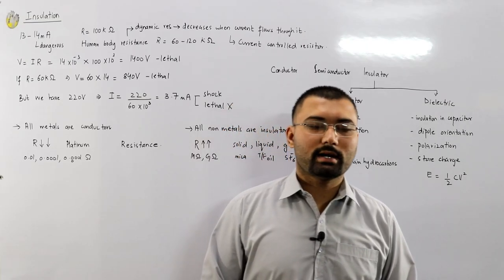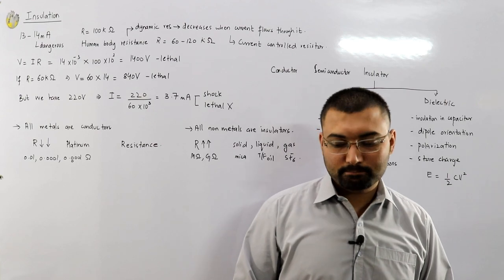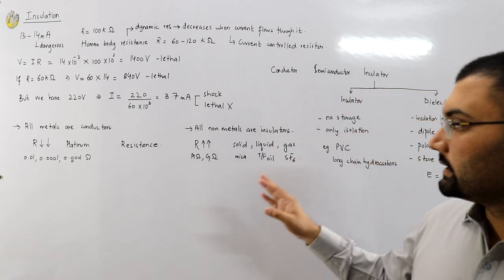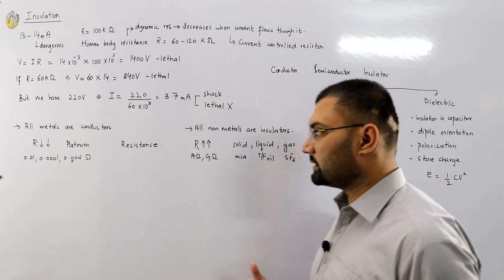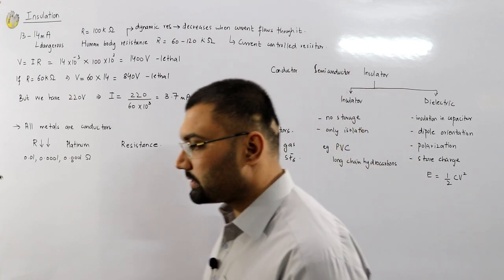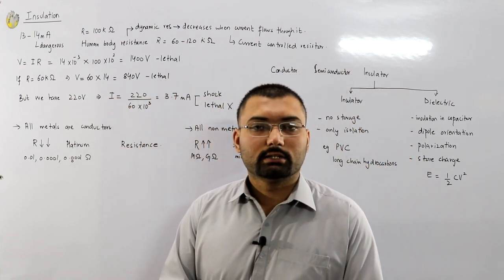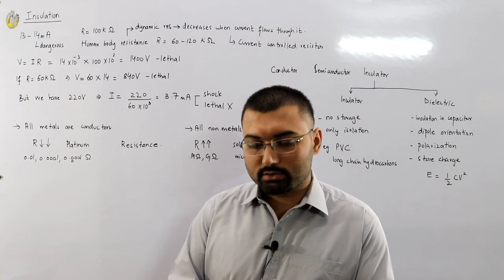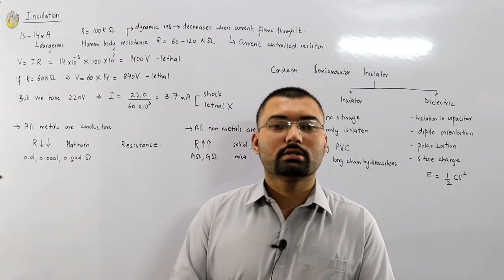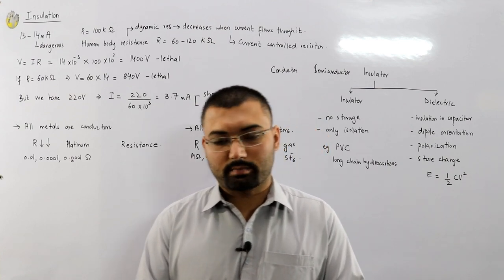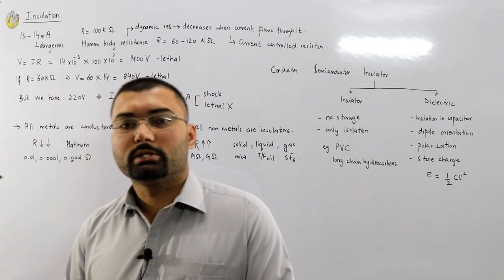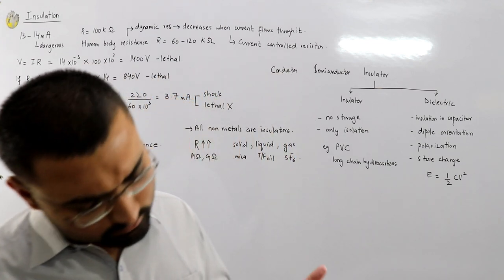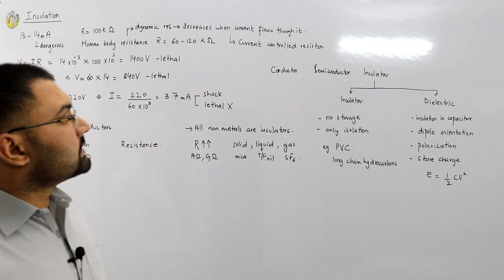Hello everyone, welcome back to the channel. In the previous video we discussed resistance — that for a conductor to be a good conductor, the resistance should be minimum, and the best insulator is one whose resistance is maximum. Resistance is the property which distinguishes between a conductor and an insulator.